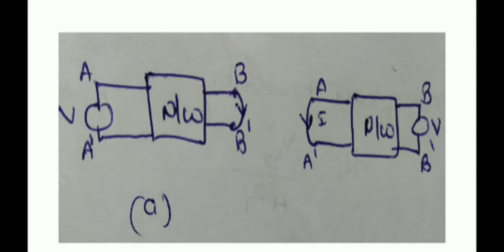We can look at an illustration now. In the first case, the AA-dash voltage source is applied, and by means of this voltage source, a current is produced in the BB-dash branch. The ratio of response to excitation in this case is I divided by V for case 1. For case 2, if the voltage source has been replaced in the other branch, there will also be some current produced in branch A again.